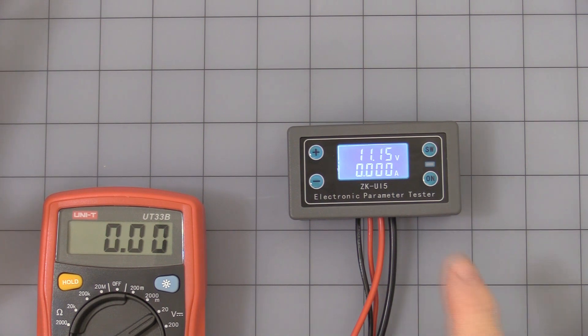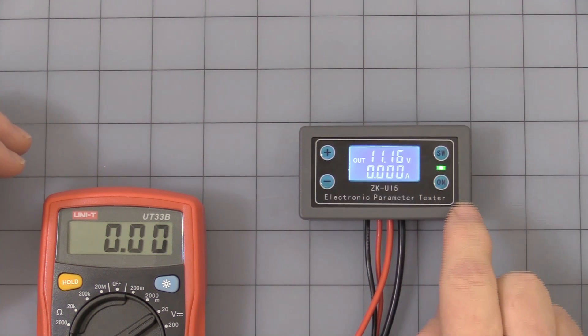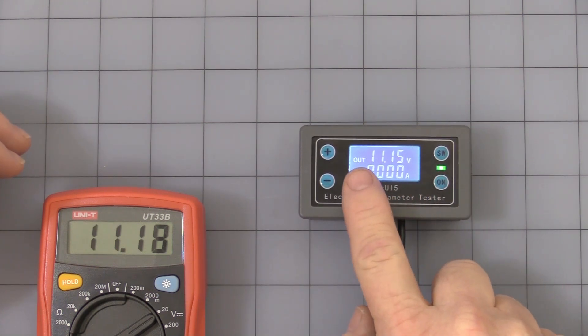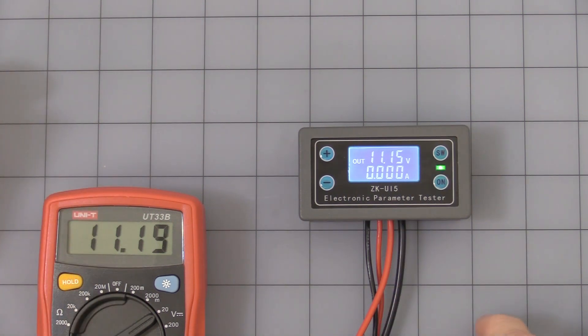Right now the output is off so nothing's flowing through. You can just hit the on button and you see a little output comes on and a green LED and the meter's displaying voltage. Press again, turn it off.